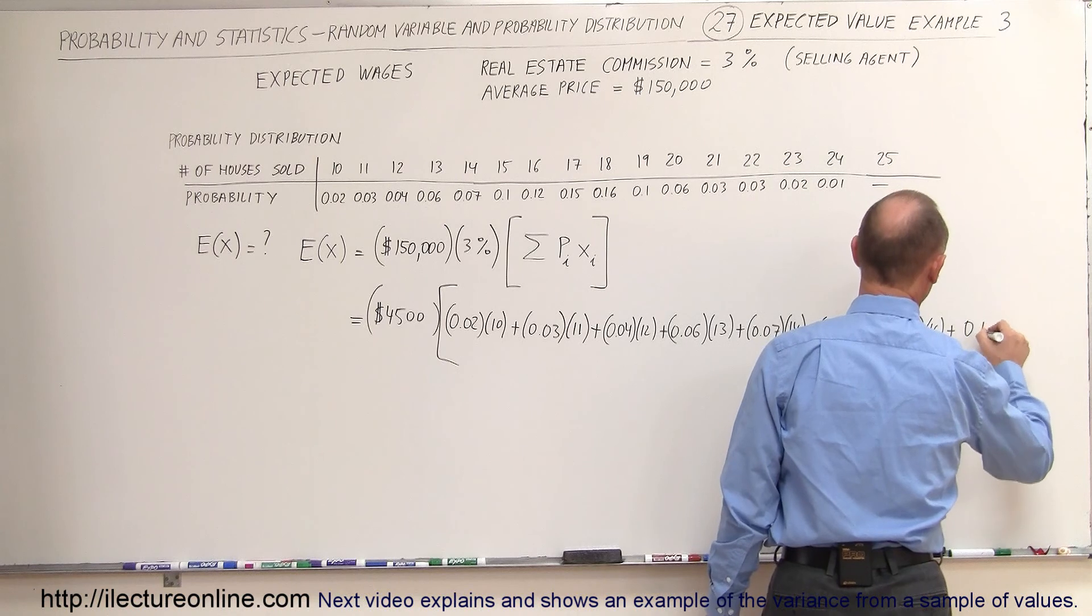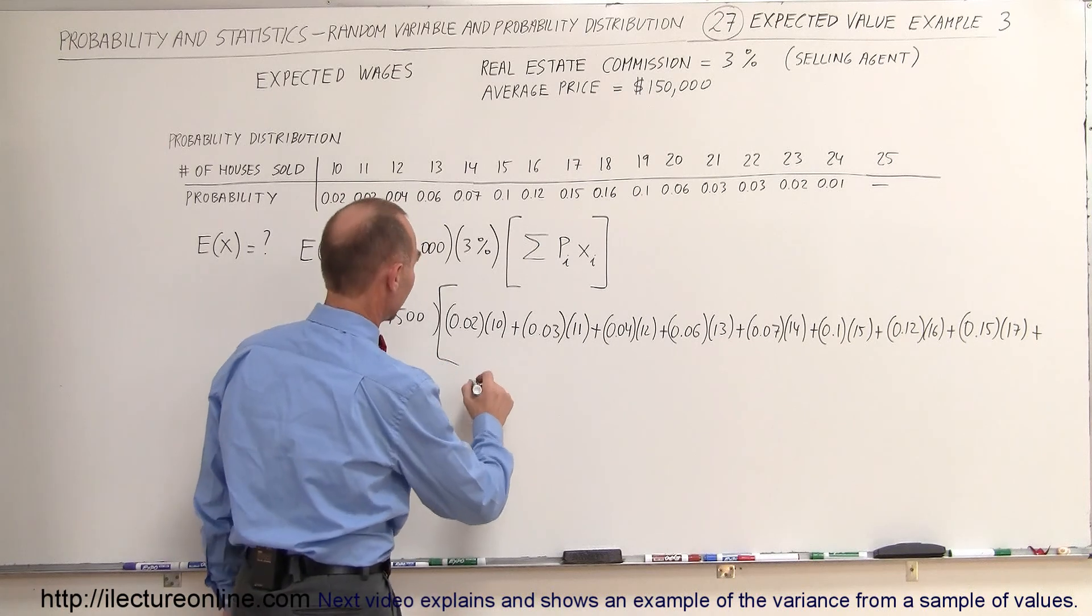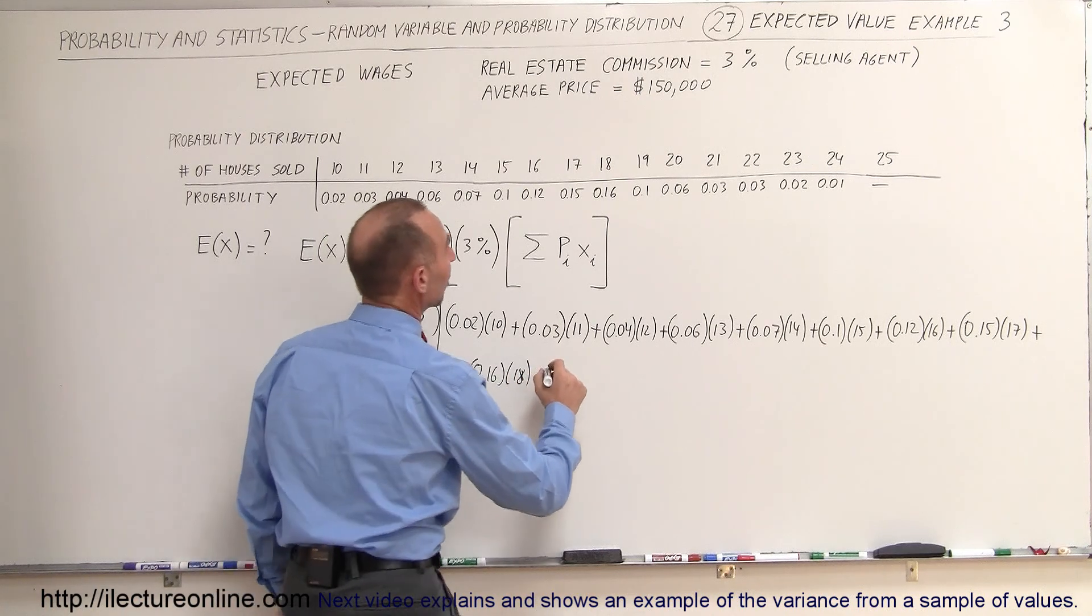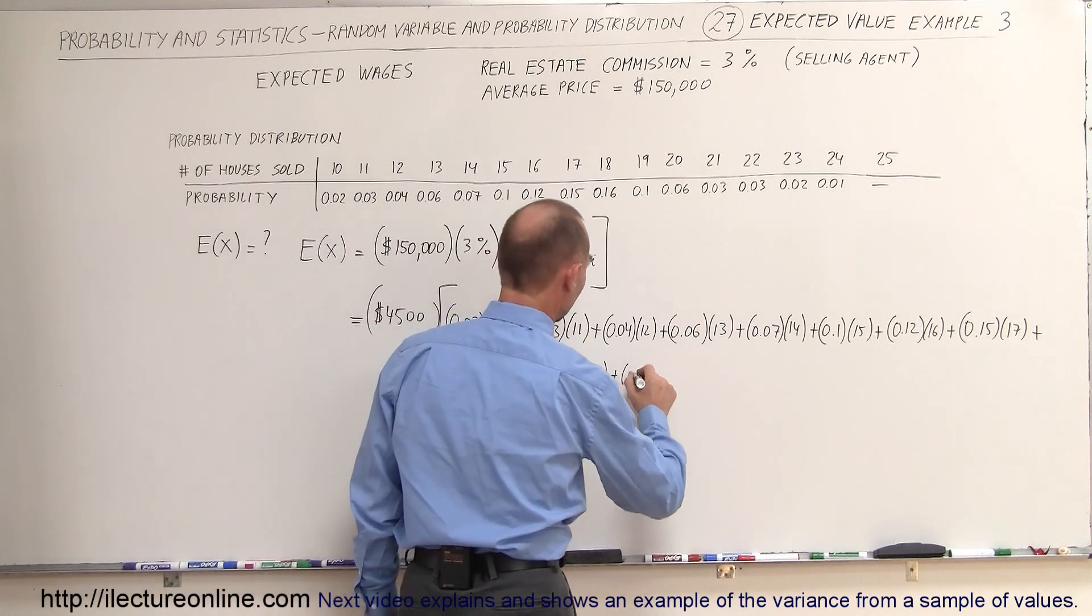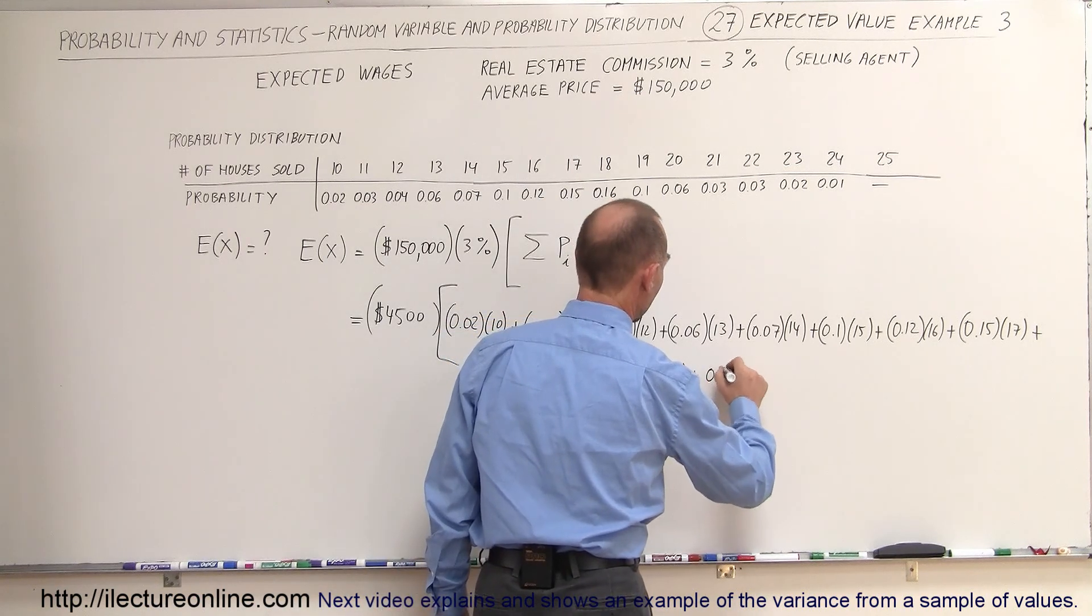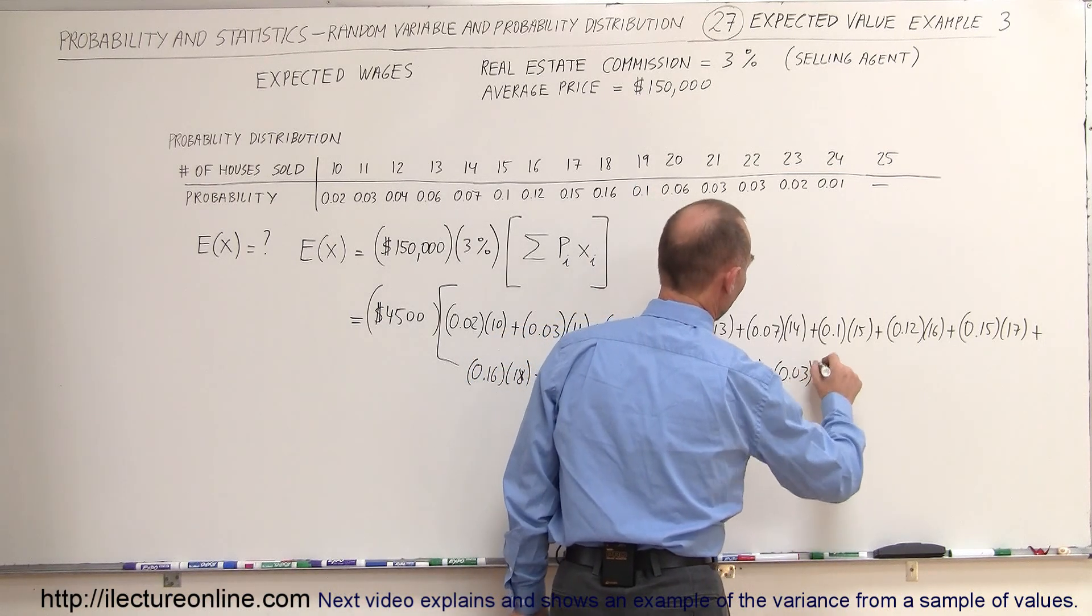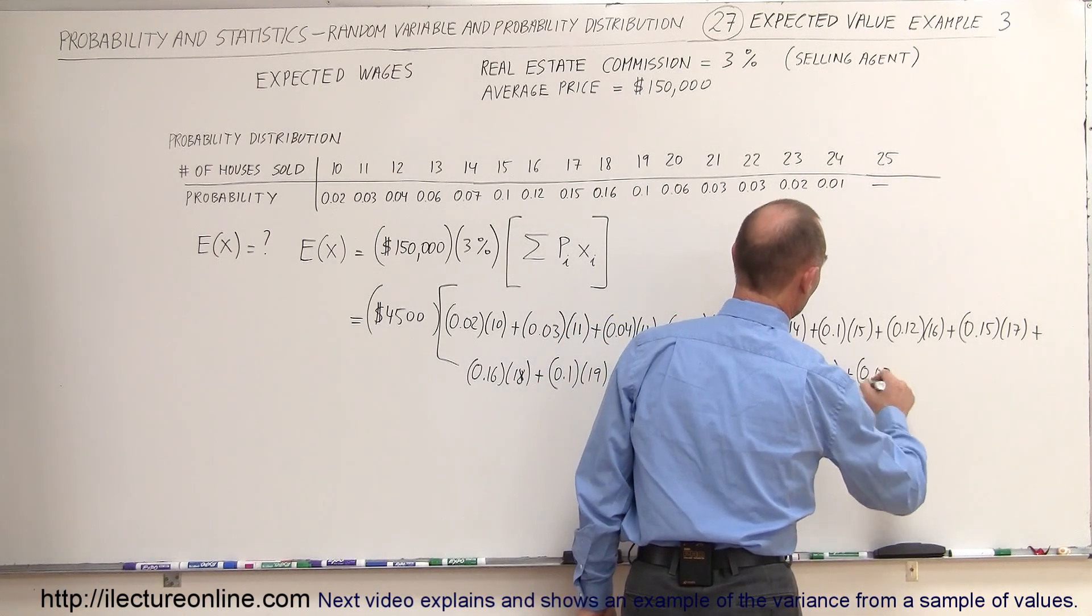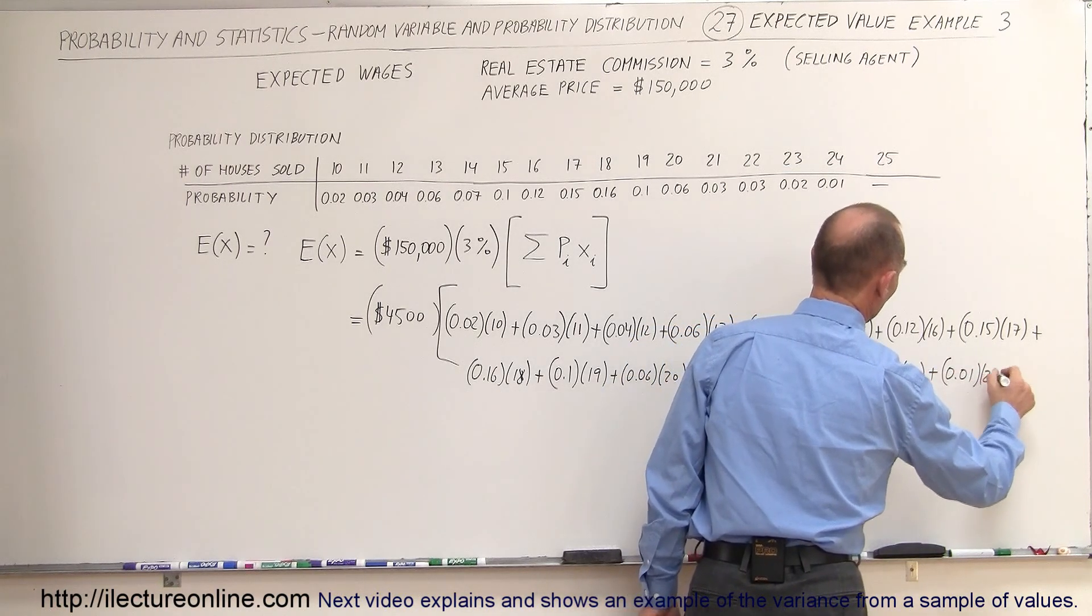and then continuing over here we get 0.16 times 18 plus 0.1 times 19 plus 0.06 times 20 plus 0.03 times 21 plus 0.03 times 22 plus 0.02 times 23 plus 0.01 times 24.